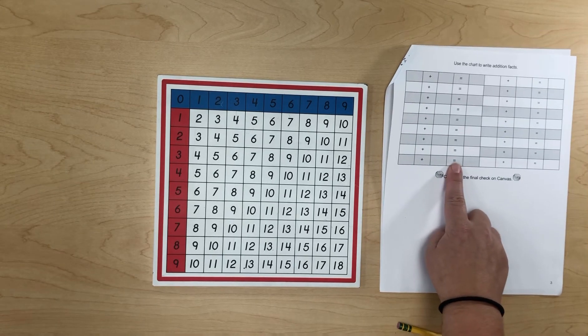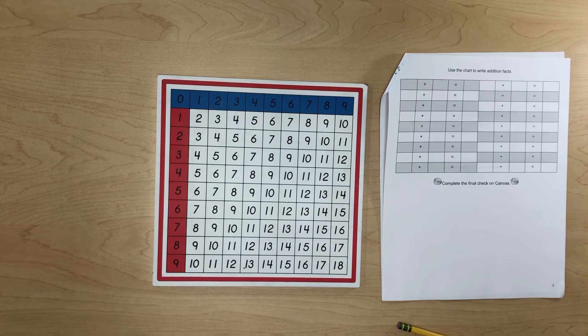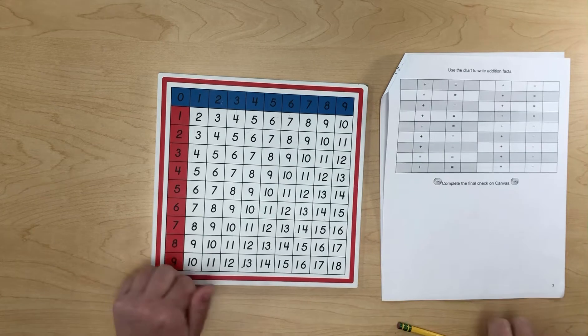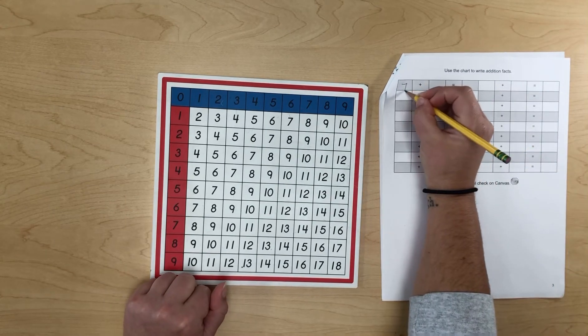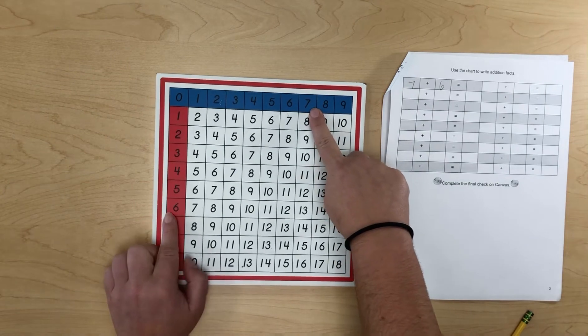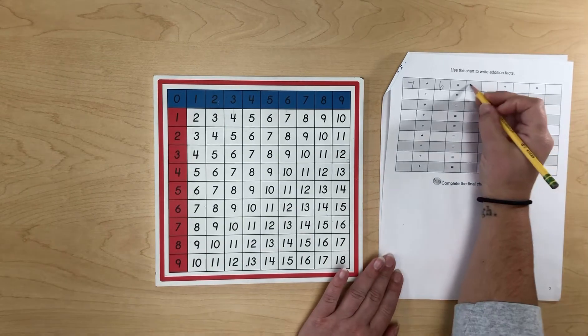The next part says use your chart to write Addition Facts. So I'm gonna come up with my own. So I write 7 plus 6 equals 13. So the sum is 13.